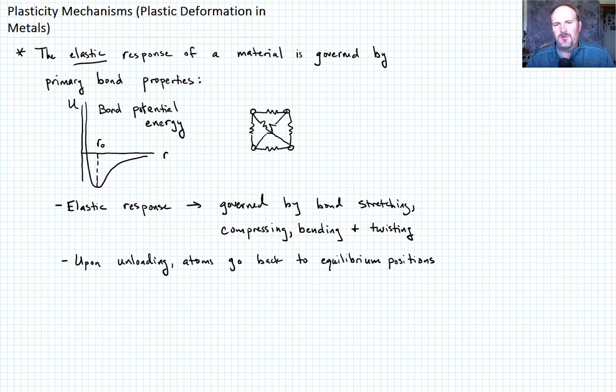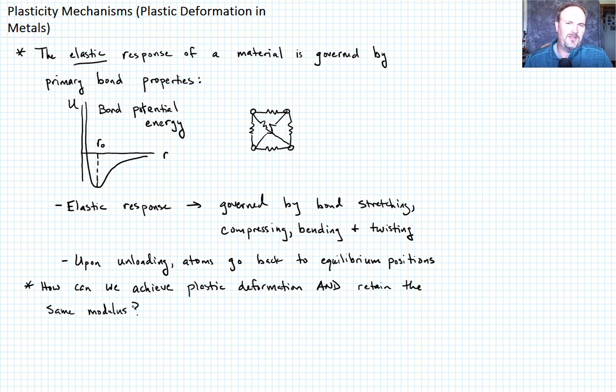So the question we want to ask when it comes to plastic deformation is how can we achieve plastic deformation? Remember that that is a permanent deformation where the elastic modulus is not changed. So how do we get the bonds to change permanently, but also not change the modulus? Well, I think what we need to do is fairly obvious. We need to somehow break the bonds, reattach them somewhere else, then the bonds will still have their same stiffness. So the elastic response will be the same, but they'll be bonded to different atoms. So we need to basically break the bonds and reattach them in new locations.